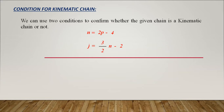By knowing the number of links, number of pairs, and number of joints, we can verify whether the given chain is a kinematic chain or not. A kinematic chain is one where there is constrained relative motion between each and every part of the chain. To confirm that, these two basic formulas are used. Other than an equality condition, if we get less than or greater than, we check what type of condition the chain represents.